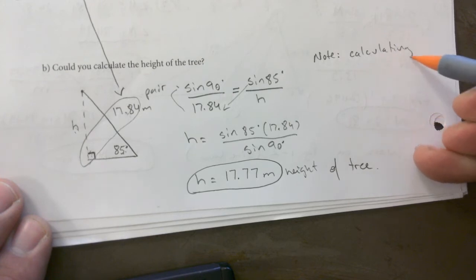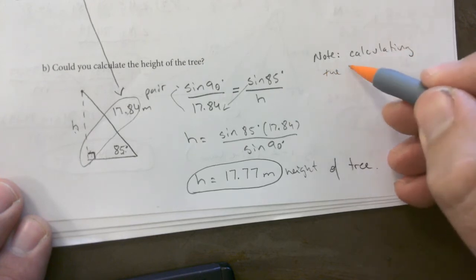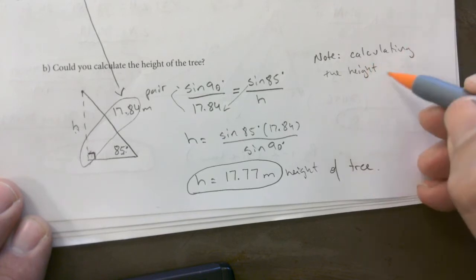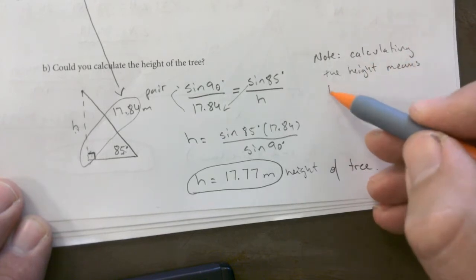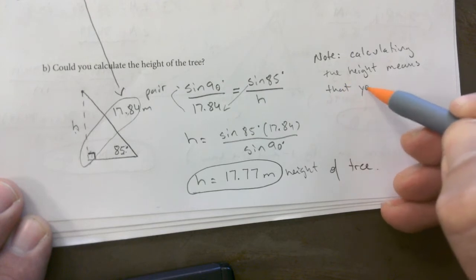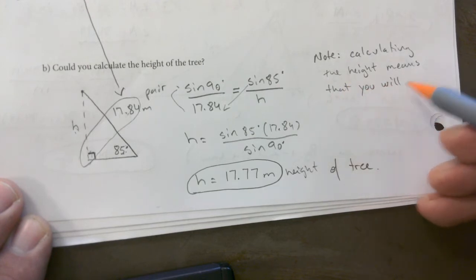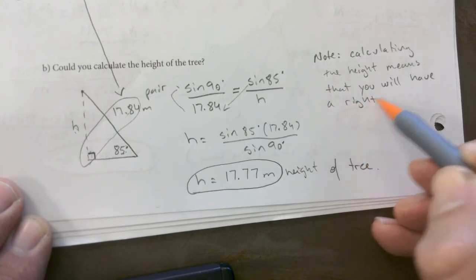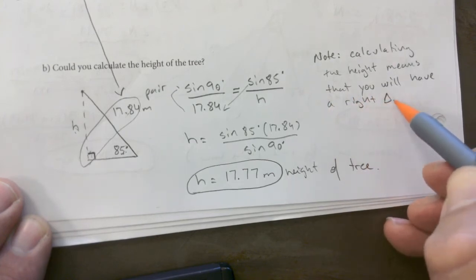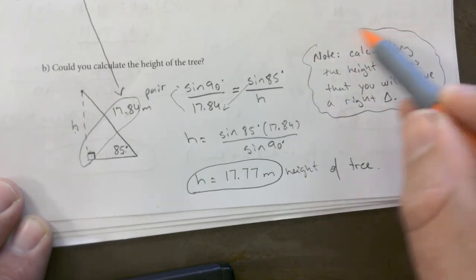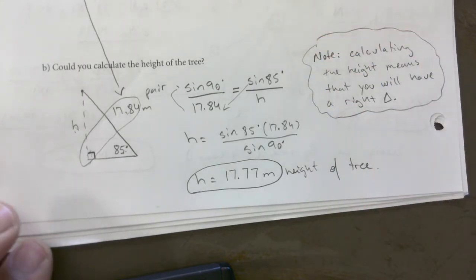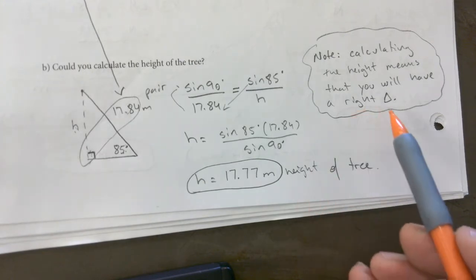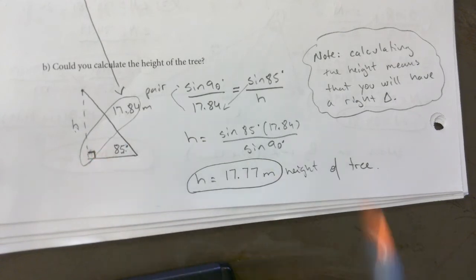And I'll make a note here: calculating the height means that you will have a right triangle. Calculating the height means that you will have a right triangle, so you can actually guarantee that box in there.